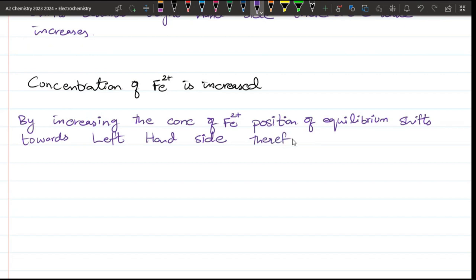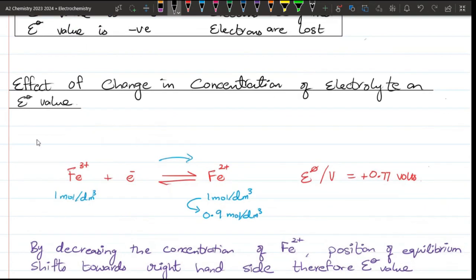Therefore, what will happen now? The E° value will decrease. You will write that it will decrease or it will become less positive or it will become more negative. So we have the possibility that the concentration of Fe²⁺ is increased or decreased.